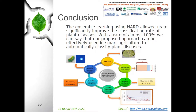Conclusion. Ensemble learning consists in combining a number of classification models in order to make them complementary in terms of classification accuracy, thus assuming that at least one of the classification models can correctly classify an image that the others have misclassified. The objective of this work was to propose an ensemble learning classification approach based on five deep learning architectures, namely VGG16, AlexNet, Inception V3, CNN, and MobileNet. We implemented two techniques of ensemble learning — soft and hard. The ensemble learning using hard voting allowed us to significantly improve the classification rate of plant diseases, with a rate of almost 100%. Our proposed approach can be effectively used in smart agriculture to automatically classify plant diseases.